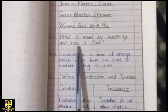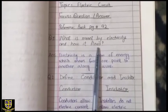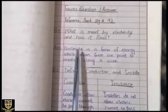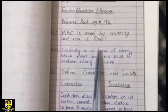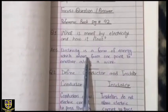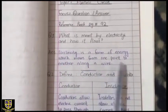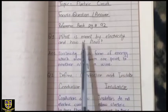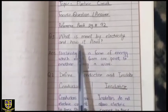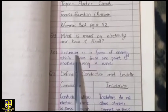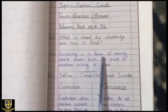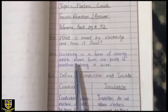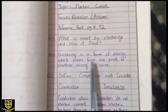Electricity is a form of energy which moves from one point to another along a wire. In Urdu: electricity energy ki ek form hai which moves from one point to another along a wire.